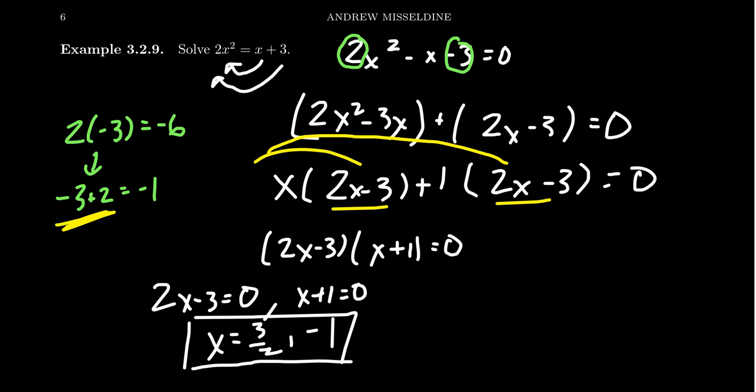It does depend on the fact that we have to be able to find a magic pair, which is not always an easy thing to do, which is why we'll present some alternative methods shortly. But when a magic pair is easy to find, then it turns out this is a very effective way of solving a quadratic equation.